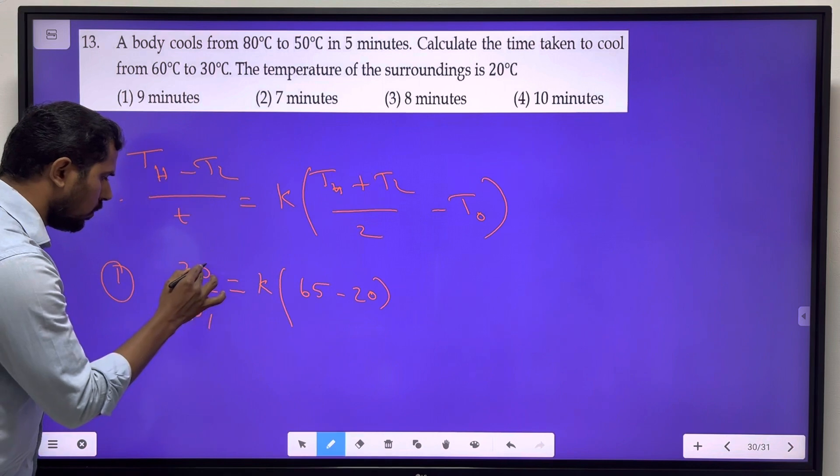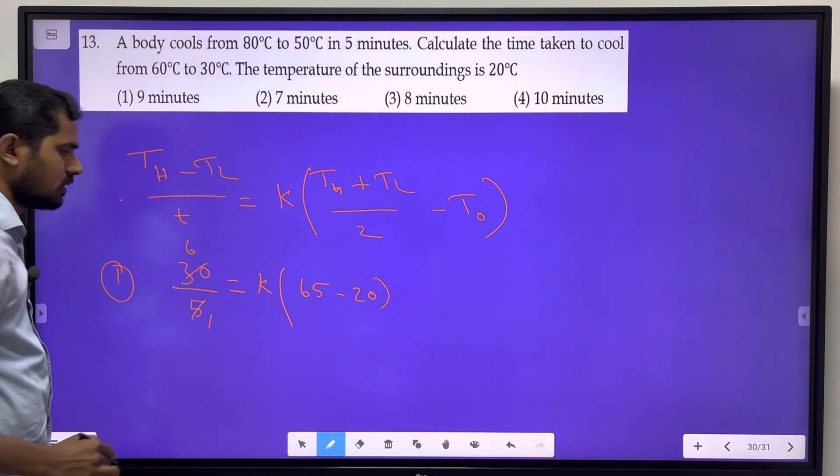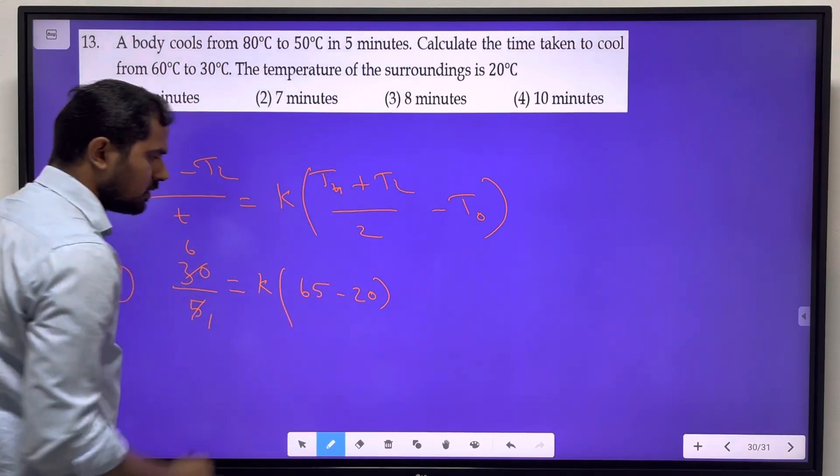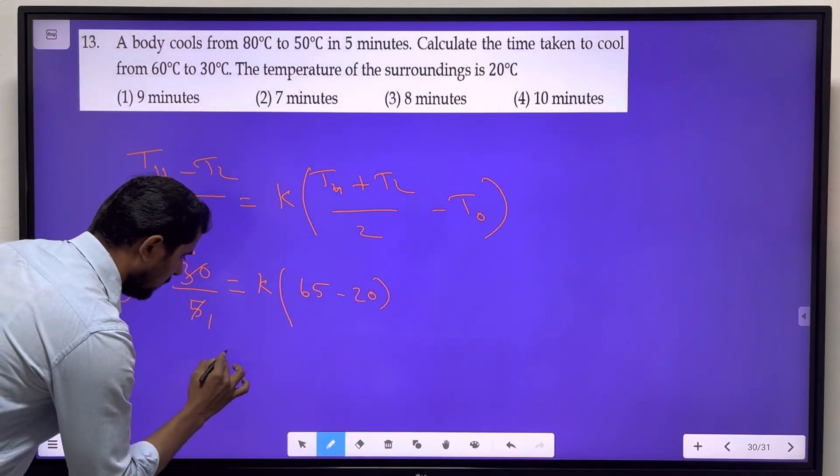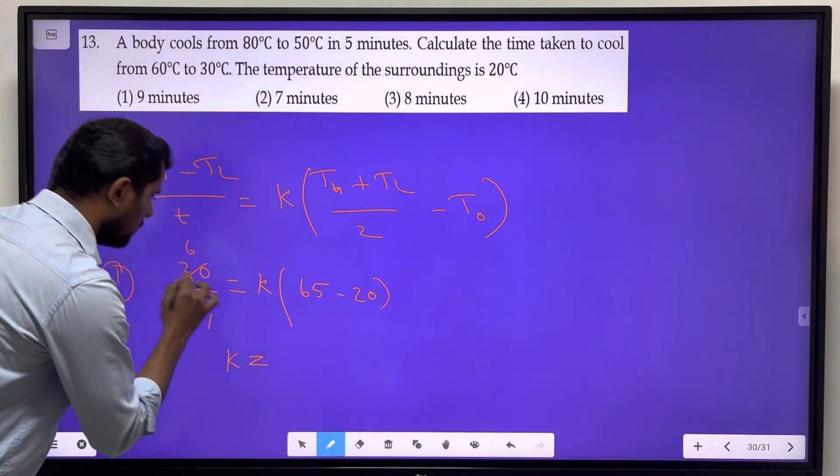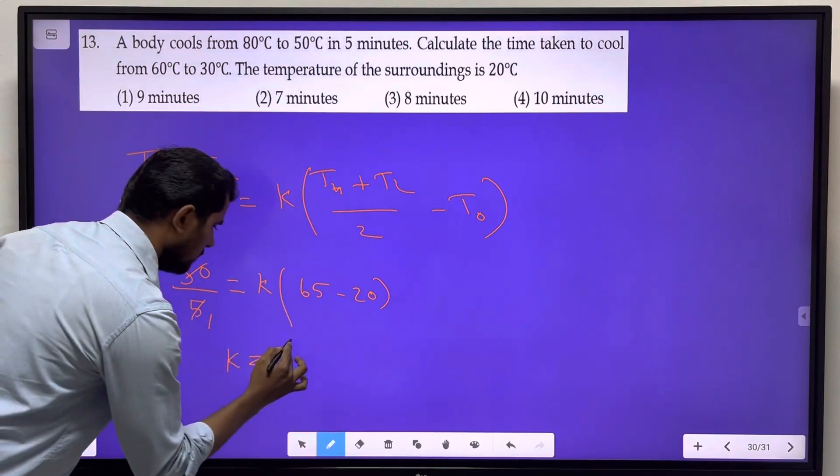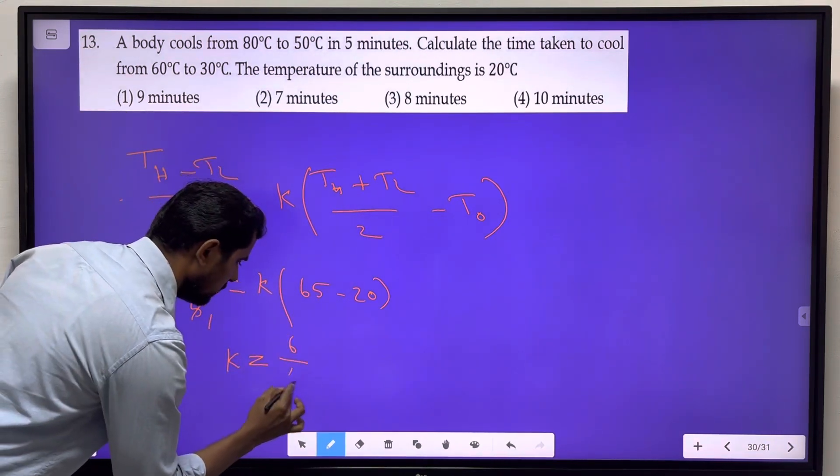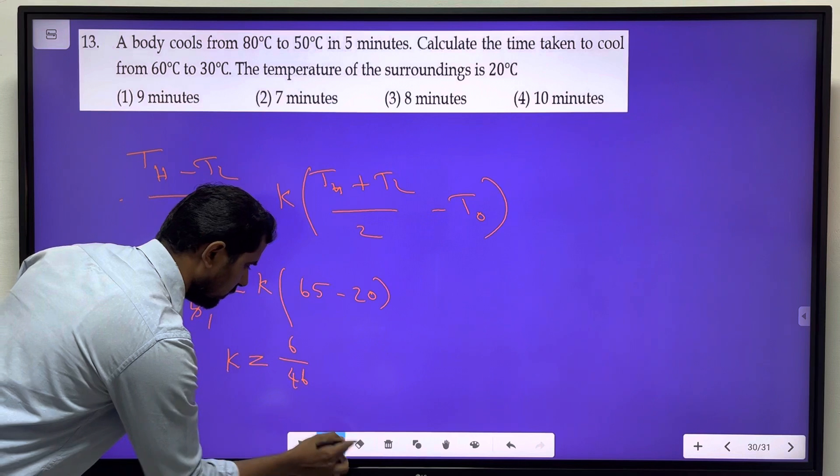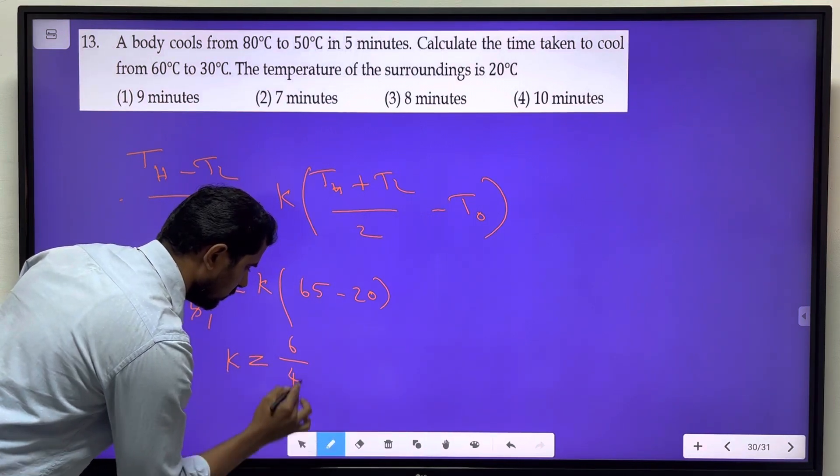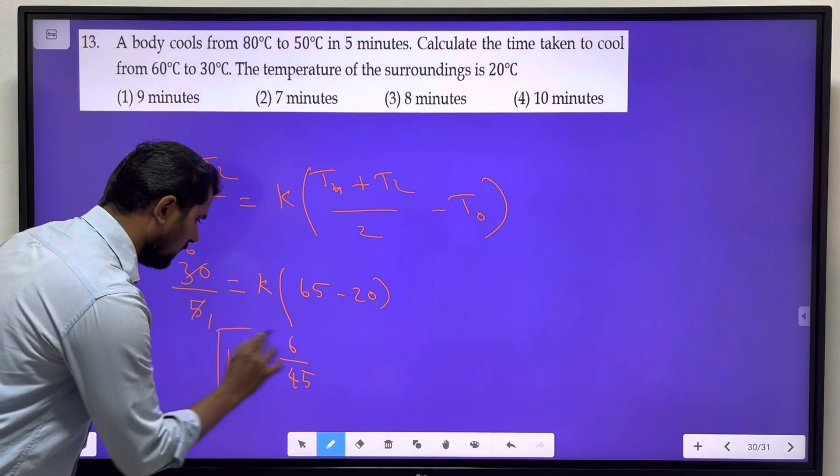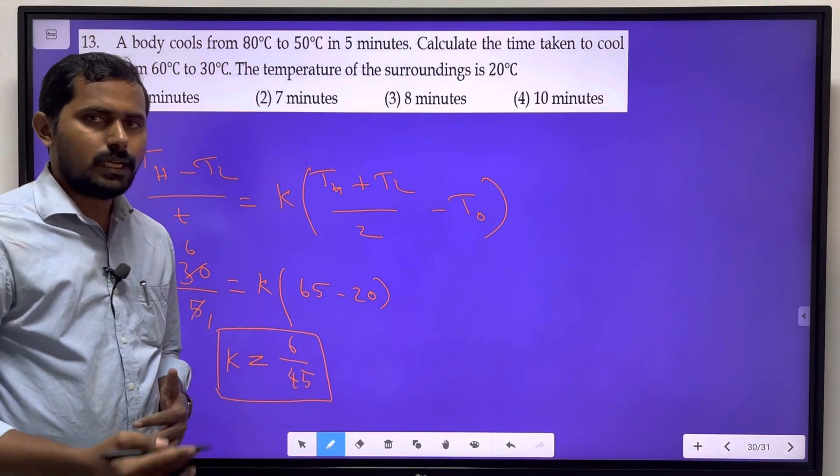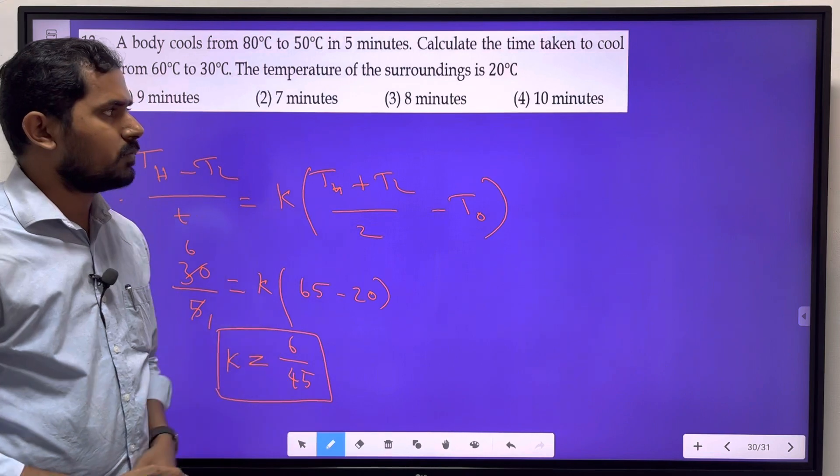So we get 30/5 = K × 45, giving us K = 6/45. This K value will be used for the next situation.